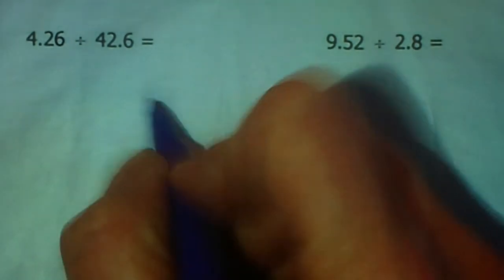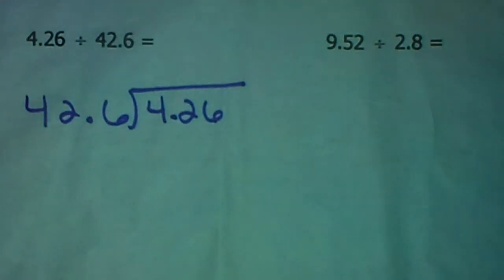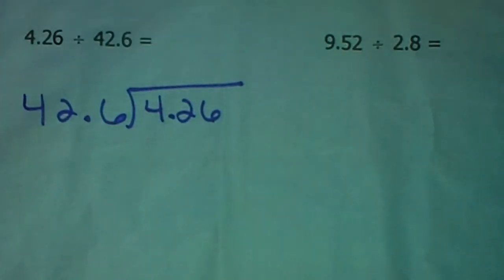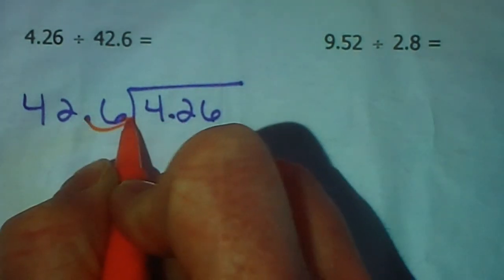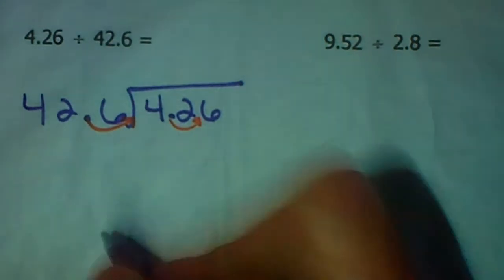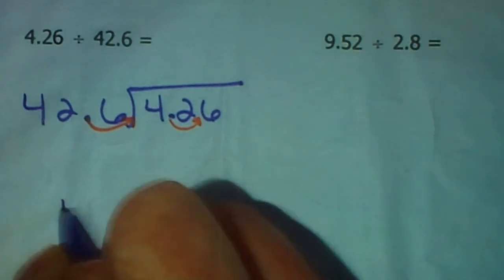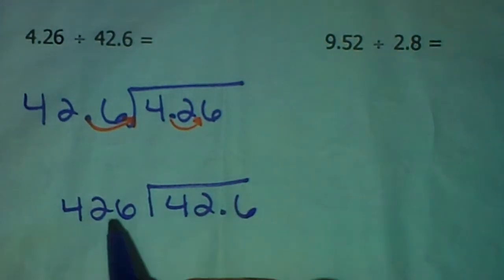Next example, I have 4 and 26 hundredths divided by 42 and 6 tenths. So we're going to write this out the old-fashioned way. We have 4 and 26 hundredths being divided by 42 and 6 tenths. So again, when you look at the outside here, this needs to be a whole number. That means my decimal point needs to get moved one place to the right. So this decimal point needs to move one place to the right.